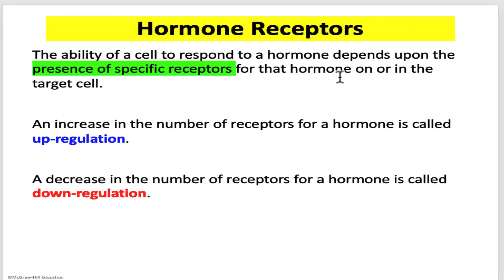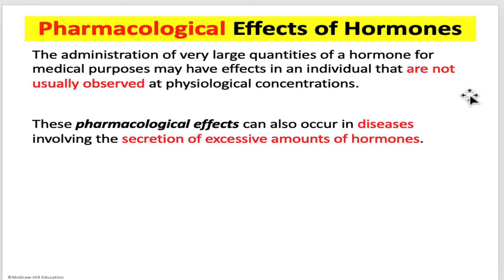The number of receptors of a particular type that a cell has is not fixed — it can be adjusted to suit certain conditions. An increase in the number of receptors is called up-regulation, and a decrease is called down-regulation. The administration of large quantities of a hormone or something that mimics a hormone can have unusual effects on our physiology. Taking pharmaceutical or illicit drugs can cause uncommon outcomes, and these pharmaceutical effects can also occur in diseases involving excessive hormone secretion by the producing cells.